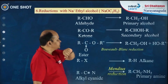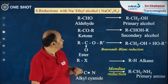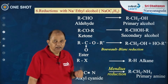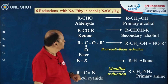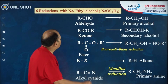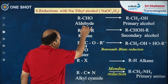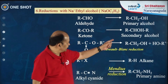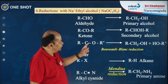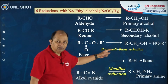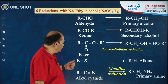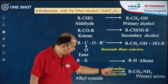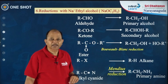The next reagent is reduction reactions with sodium and ethyl alcohol. Sodium reacts with ethyl alcohol to form sodium ethoxide, generating hydrogen in the process. In these reactions, aldehydes convert to primary alcohol, ketones to secondary alcohol, and esters to a mixture of alcohols — this is called Bouveault–Blanc reduction. Alkyl halide gives alkane, and alkyl cyanide gives primary amine — this is called Mendius reaction.